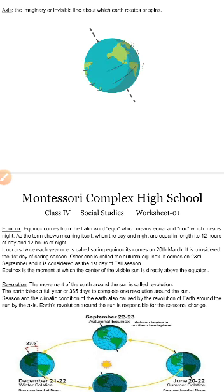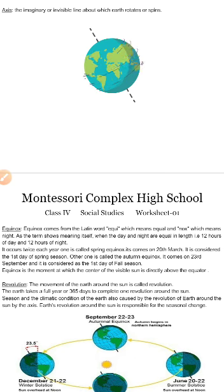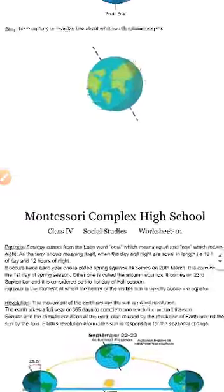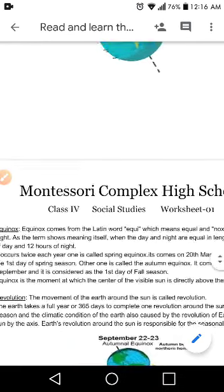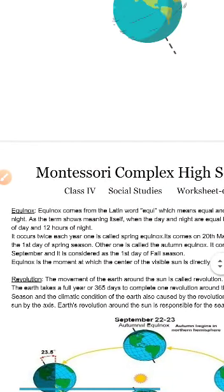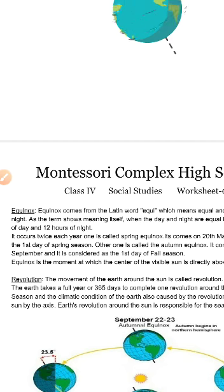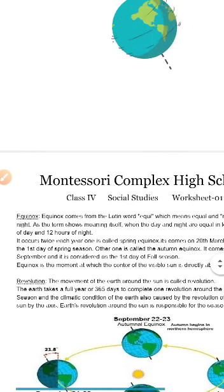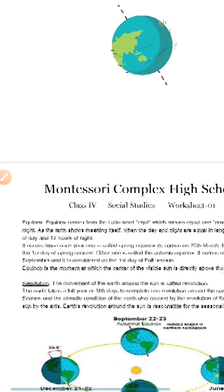One equinox is called the spring equinox, which comes on 20th March — it is the first day of the spring season, when the night and day hours are exactly equal. The other one is called the autumn equinox, which comes on 23rd September. You can set a reminder for that day and actually notice if the hours of night and day are the same. It is considered the first day of fall season, when leaves begin to change.